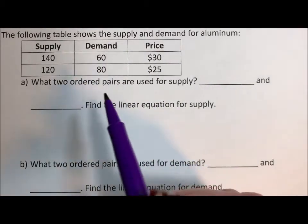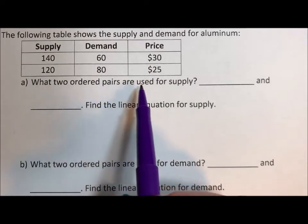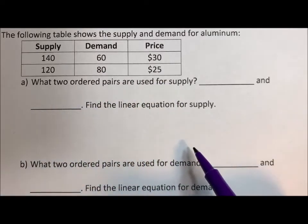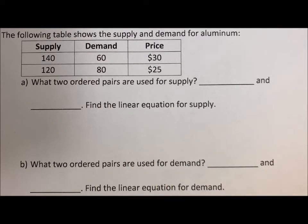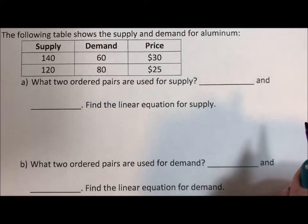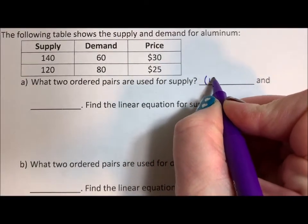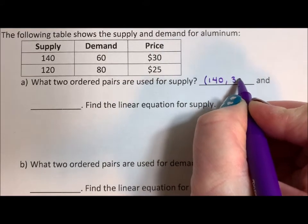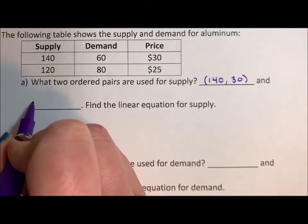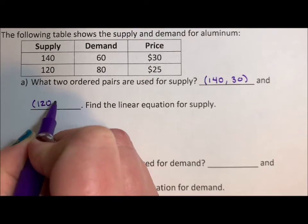So what we're going to do is we're going to find our ordered pairs for supply, figure out an equation for supply. Find our ordered pairs for demand, find an equation for demand, and then we'll use those two equations to find an equilibrium point, the point at which we can maximize our profit. What two ordered pairs are used for supply? So for supply we have 140 with 30 and 120 with 25.